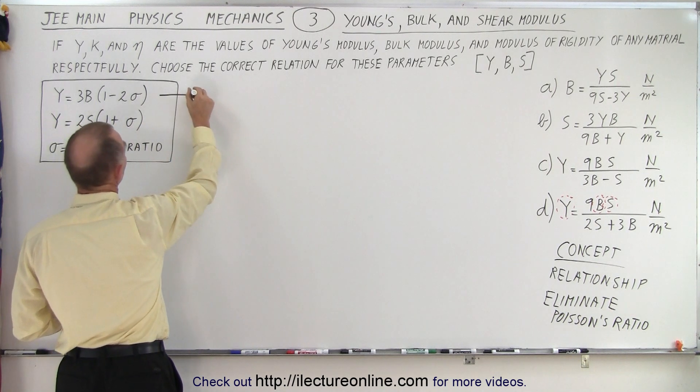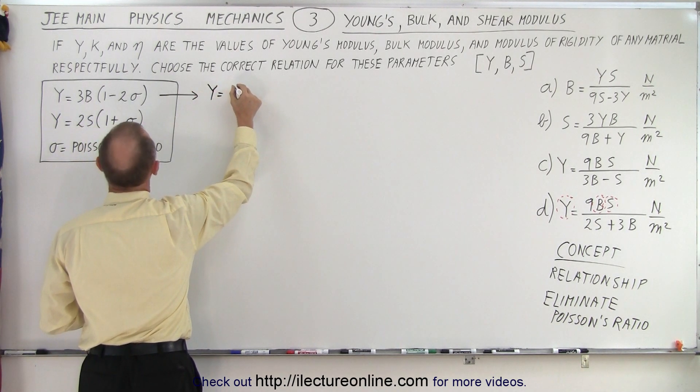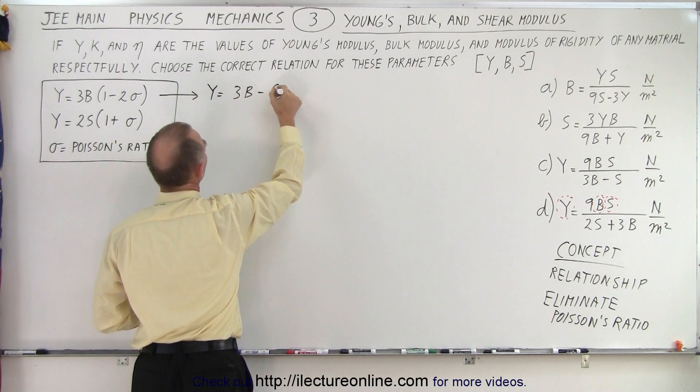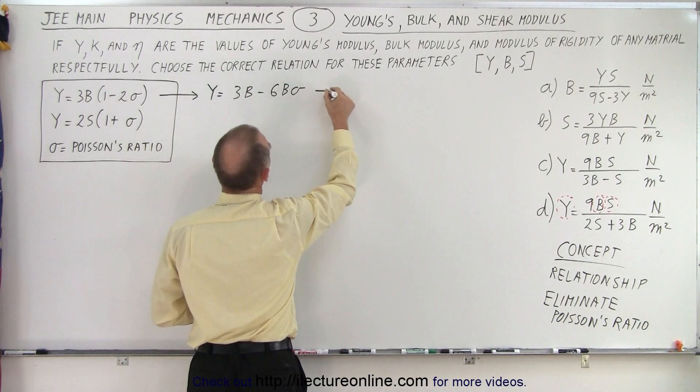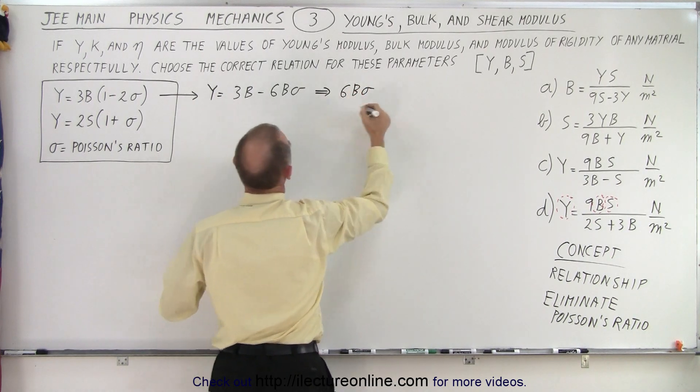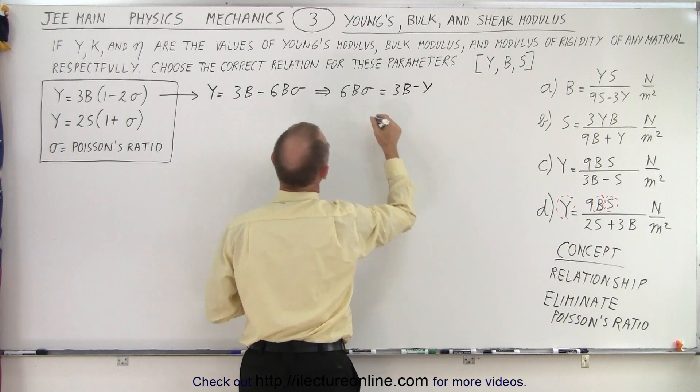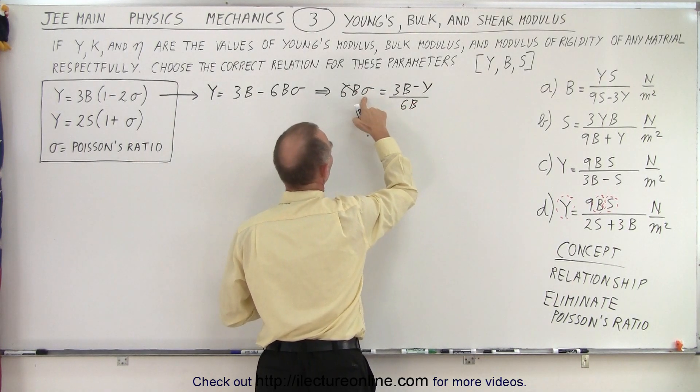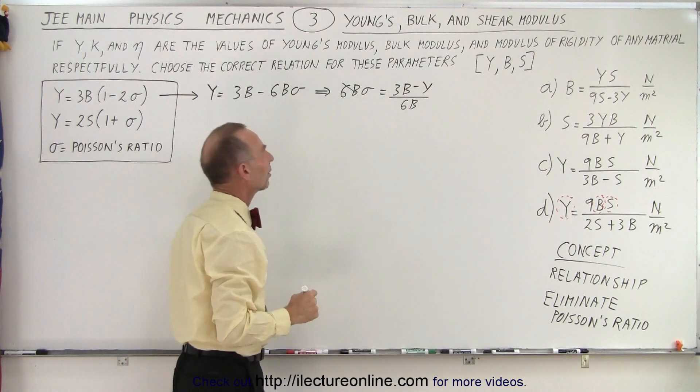So, on the first equation, multiplying through, we get Young's modulus is equal to 3B minus 6B sigma. And then, when we move that across, we have, from here, we can now write that 6B sigma is equal to 3B minus Young's modulus, and then divide both sides by 6B. Now we have Poisson's ratio in terms of the other indices.